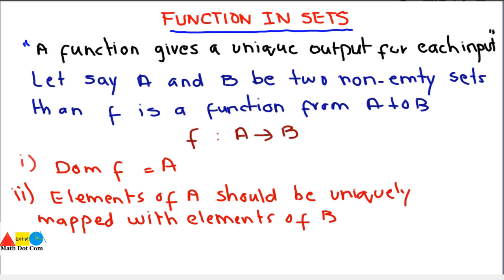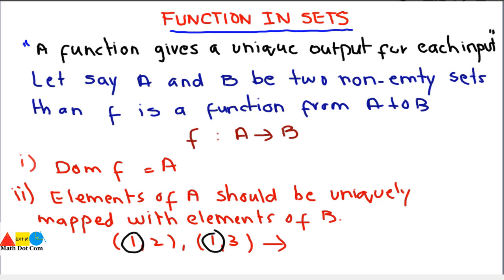The second condition is that elements of A should be uniquely mapped with elements of B. That means there are no two ordered pairs having the same first element. For example, if you have (1,2) and (1,3), you cannot say it is a function, because the first element in both ordered pairs is the same. So this is not a function.